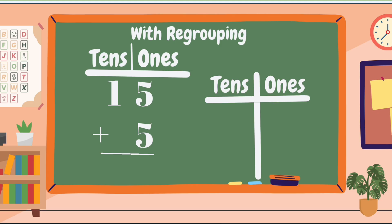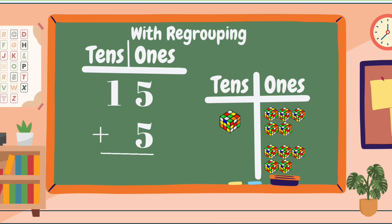To add 15 and 5, first we have to add the ones, which are 5 and 5. To understand this clearly, we have here Rubik's cubes. As you can see, we only have one Rubik's cube in our tens column, while in our ones column we have 5 Rubik's cubes at the upper part and 5 Rubik's cubes in the lower part, because our ones are 5 and 5.